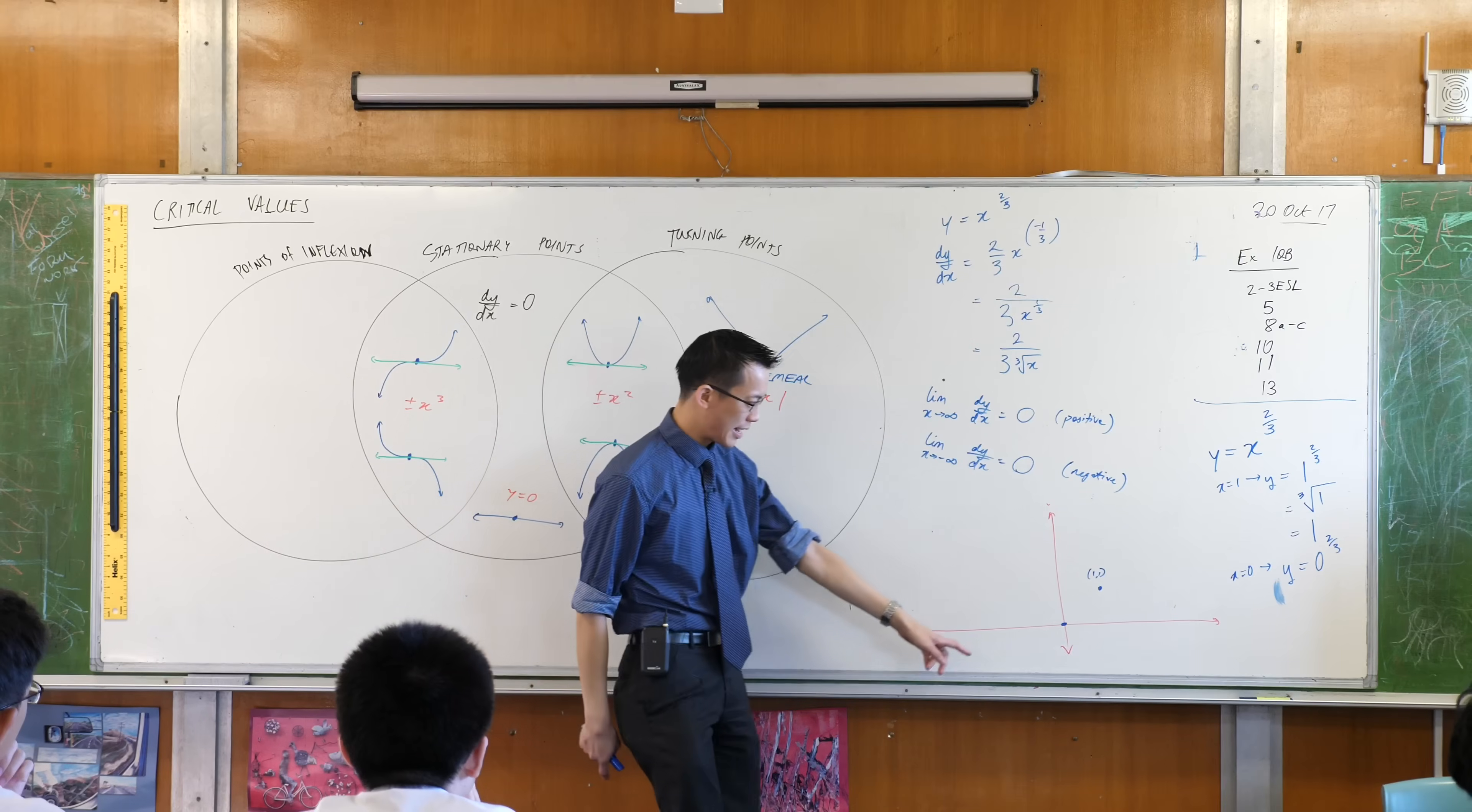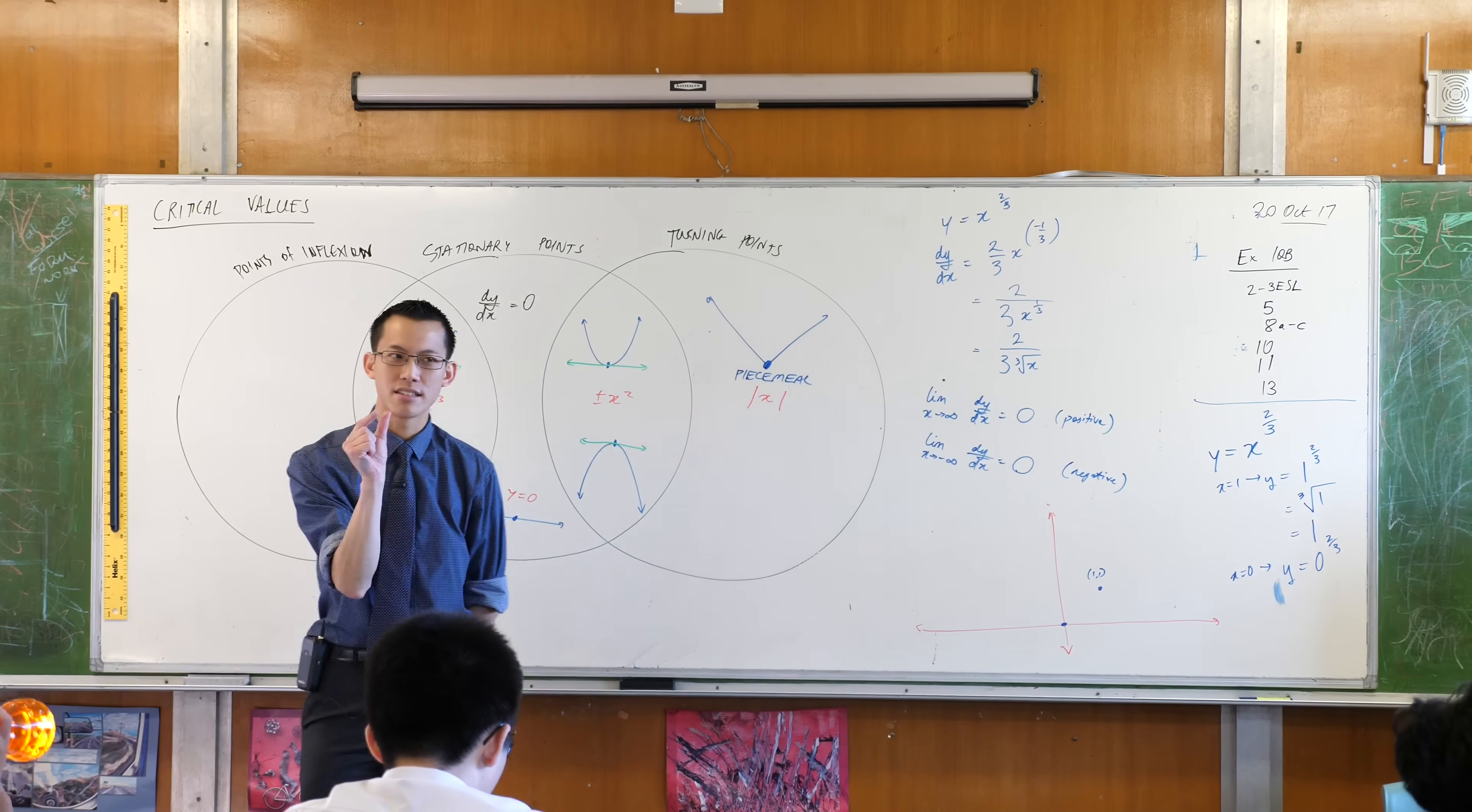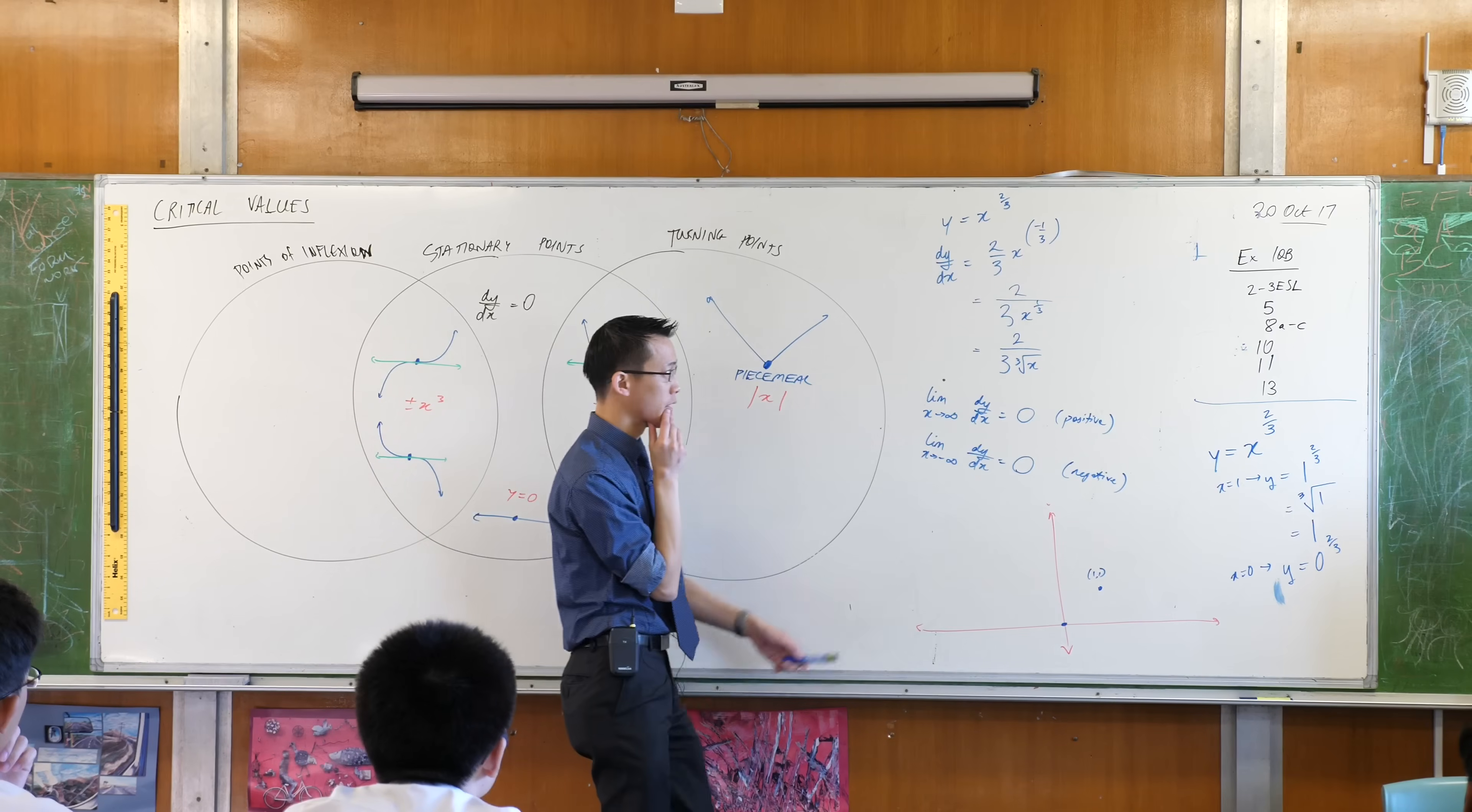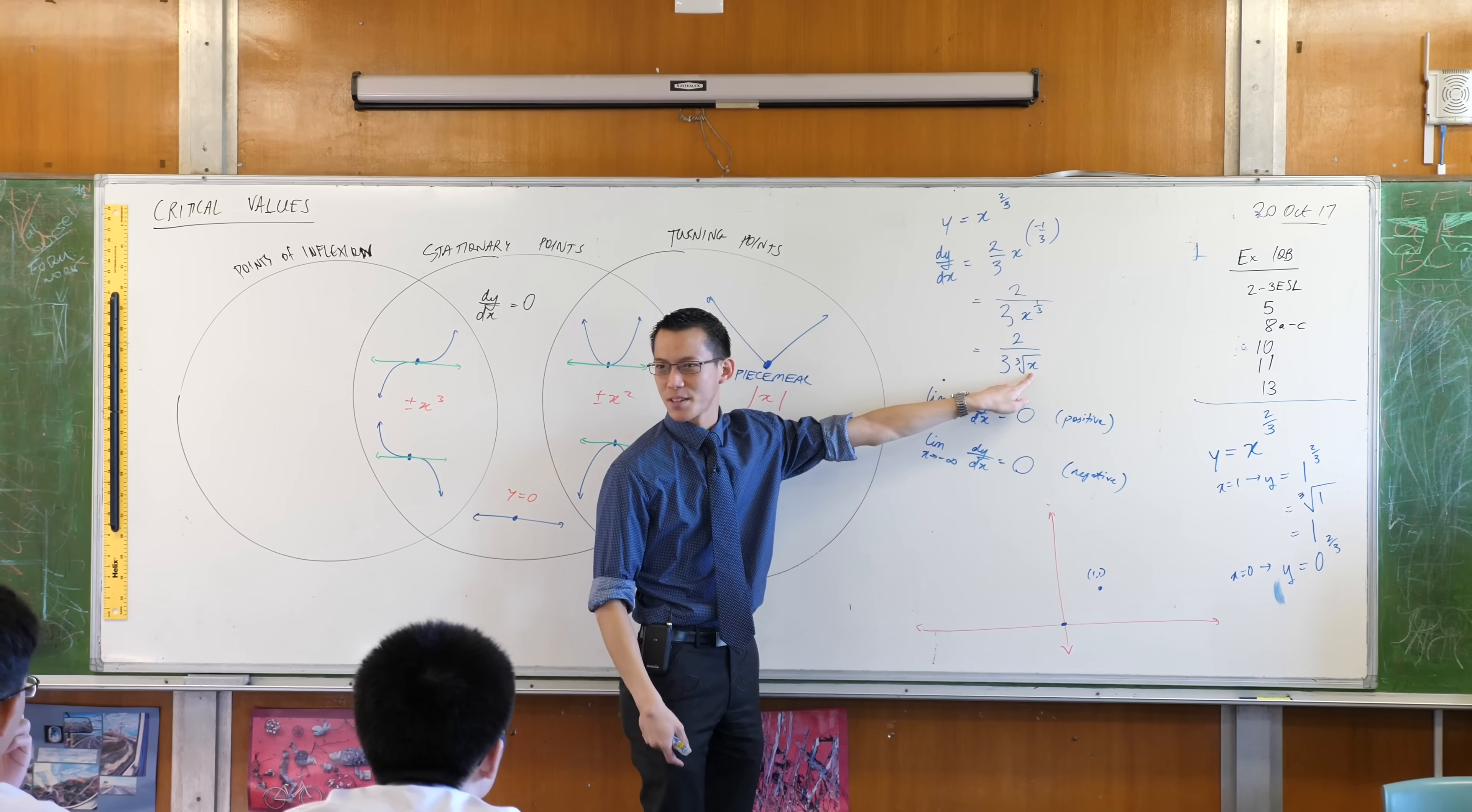The last question is, what happens when I get in here? That's the middle of the graph. That seems like something interesting might happen. You tell me. As x gets tiny, as I get closer and closer to x equals zero, what's going on with that derivative? I asked you what happened when this got big. You told me the whole thing got small, which is true. Now I'm asking what happens when this gets small.